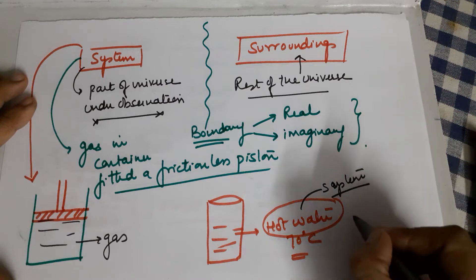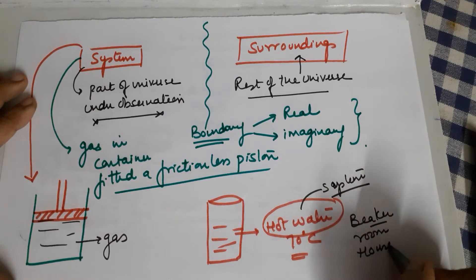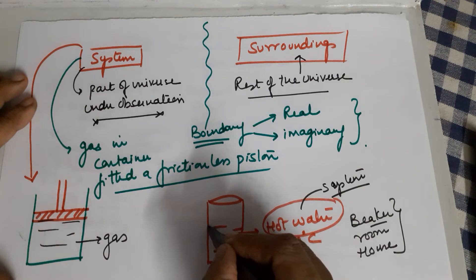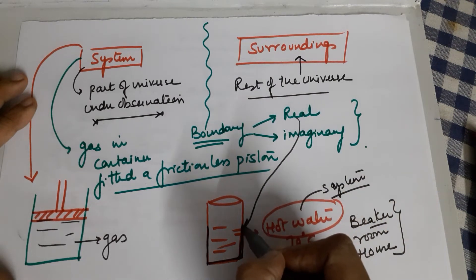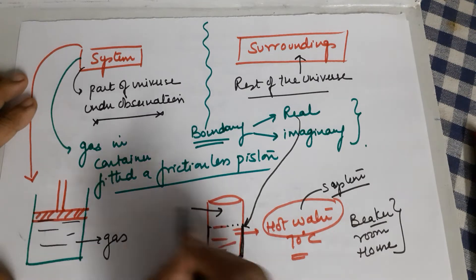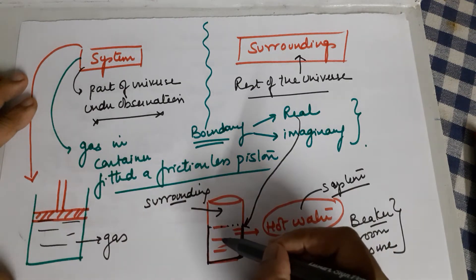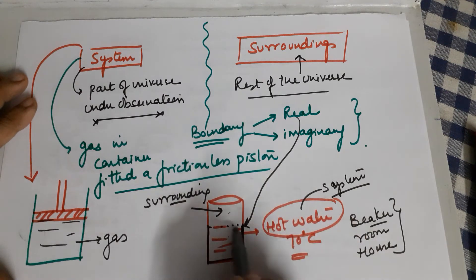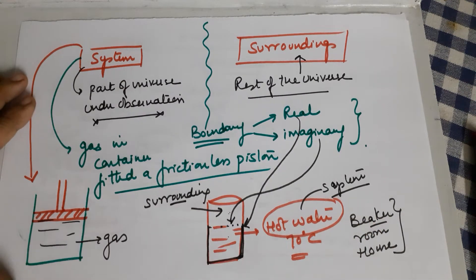Rest everything is your surroundings — the beaker, the room, the house, the lab. The beaker's walls are the real boundary. But look at the top of the water — is there any point where you can separate the water from the air above it? The air above is your surroundings since you are only studying the water. You cannot see any boundary between the water and the air above it, so that separation is called an imaginary boundary.